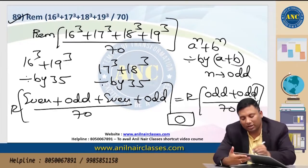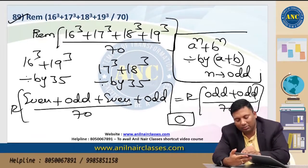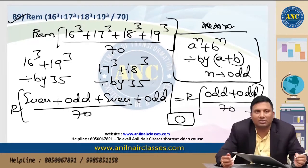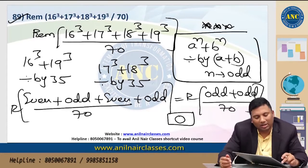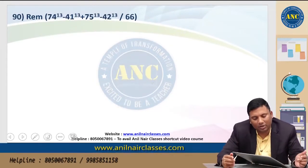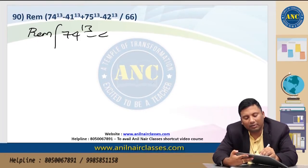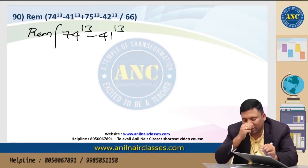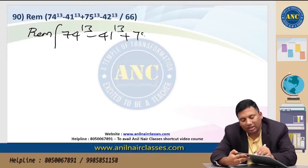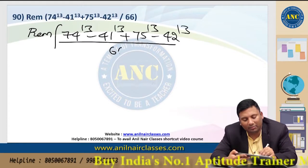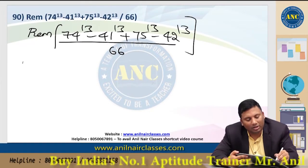This checks the property: a^n + b^n is always divisible by (a + b) if n is odd. Next problem: Reminder 1 — 74^13 minus 41^13 plus 75^13 minus 42^13 divided by 66.